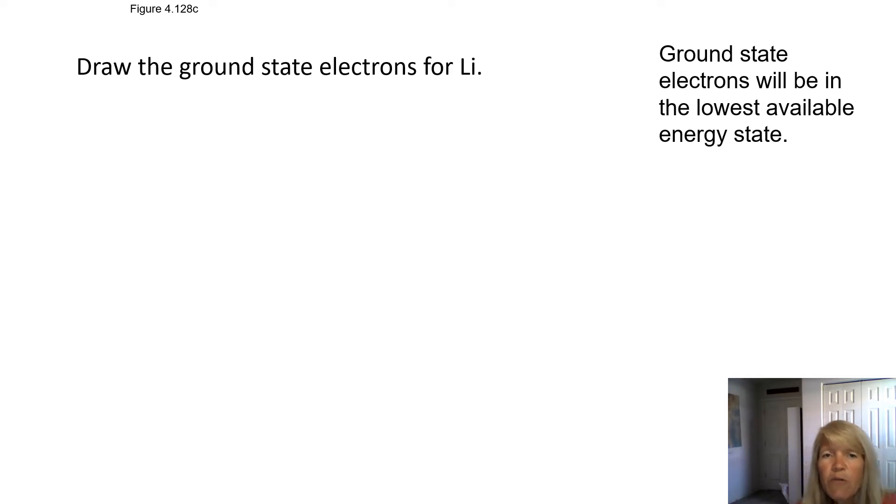Let's draw what the ground state electrons look like for lithium. Now remember, the ground state is the lowest possible. And so we look at the periodic table, and lithium has three electrons. So lithium would have a nucleus. And then the first energy level, remember, it holds two. So it will have two. And the second level, well, we've used up two, we have one more. It will go in the second level. So n equals one has two, n equals two has one.